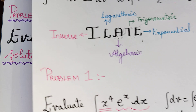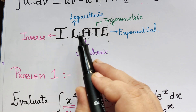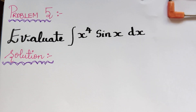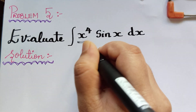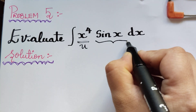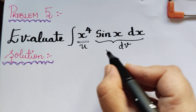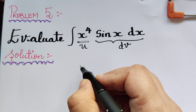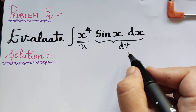By the concept we have learnt previously, algebraic appears first and trigonometric appears after that. So we choose u as x to the power 4, which is the algebraic function, and whatever is remaining will be chosen as dv. We then find the differentiations u', u'' etc. and apply them in Bernoulli's formula.